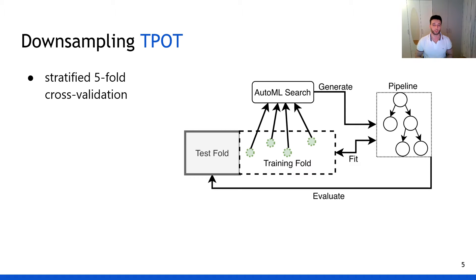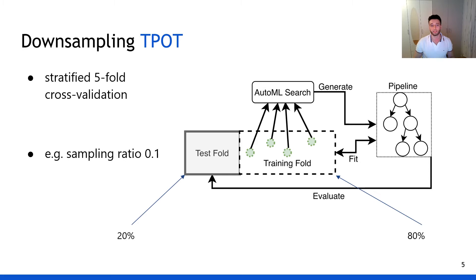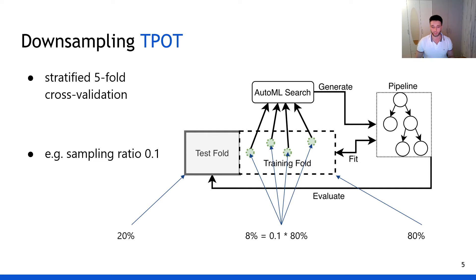As the pipeline search space is practically limitless, significant computational resources and time are needed. We evaluated one approach to alleviate this challenge: downsampling the dataset prior to executing the search. Given a sampling ratio of 0.1 and 5-fold cross-validation, we do the following for each iteration. We first downsample the training fold using a sampling ratio of 10%. This 8% of the whole dataset is then used to run our AutoML search and obtain the final best pipeline. This pipeline is then fit on the full training fold — 80% of the data — and finally evaluated on the disjoint test set, which is the remaining 20% of the data.